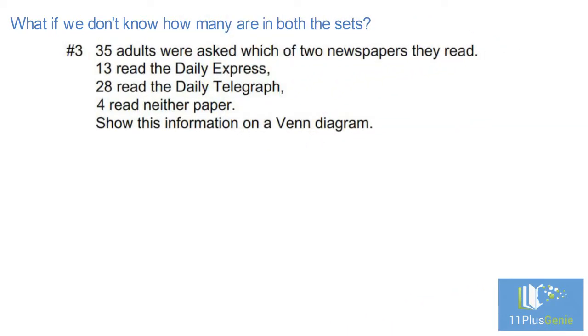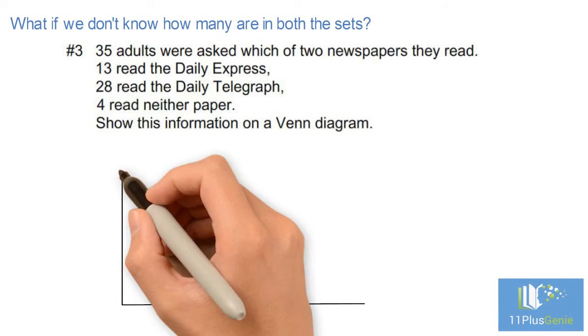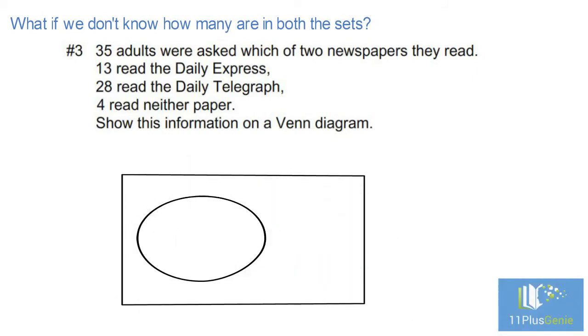What if we don't know how many are in both the sets? 35 adults were asked which of two newspapers they read. 13 read the Daily Express. 28 read the Daily Telegraph. 4 read neither paper. Show this information on a Venn diagram.